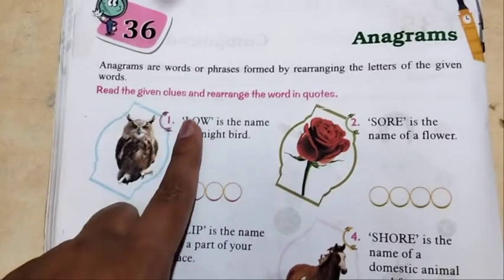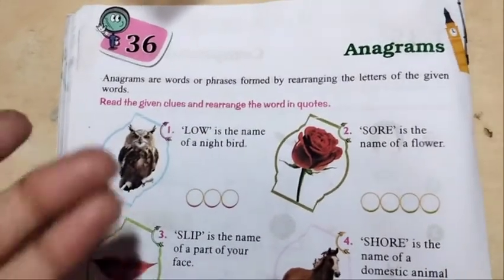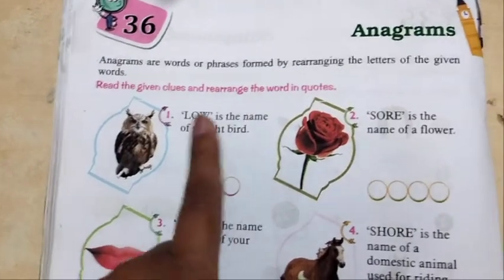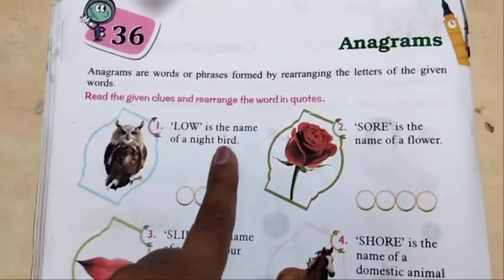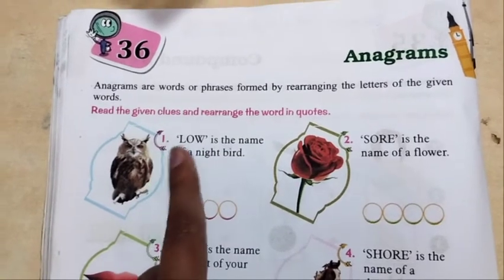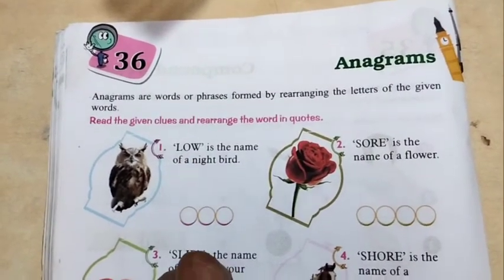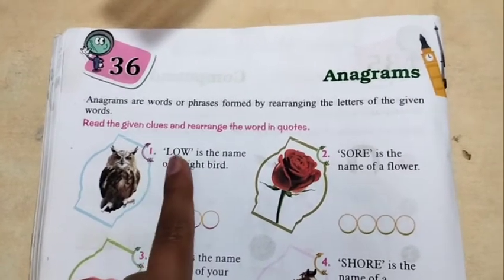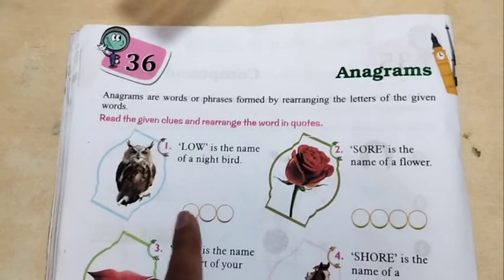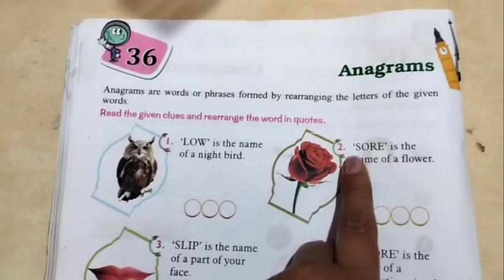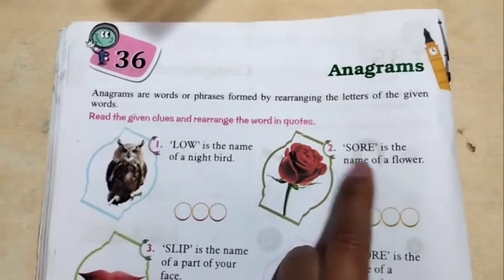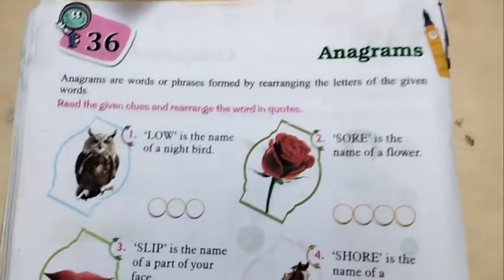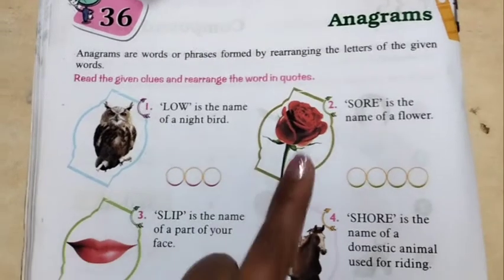For example, L-O-W. How can we rearrange this to make a meaningful word? LOW is the name of a night bird. The night bird whose name uses L-O-W — those three alphabets — is OWL. Also, SORE is the name of a flower — a flower whose name uses S-O-R-E — that is ROSE.